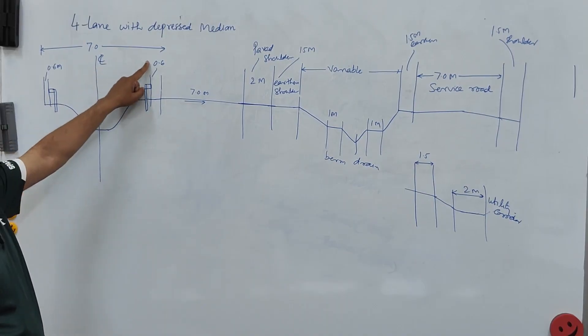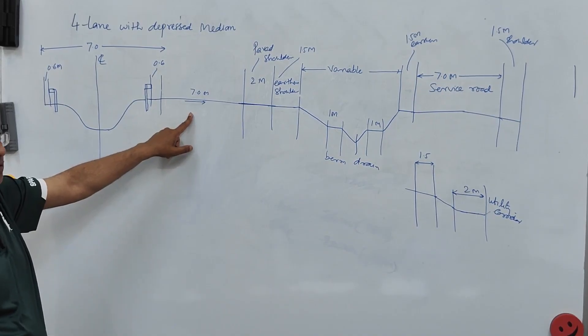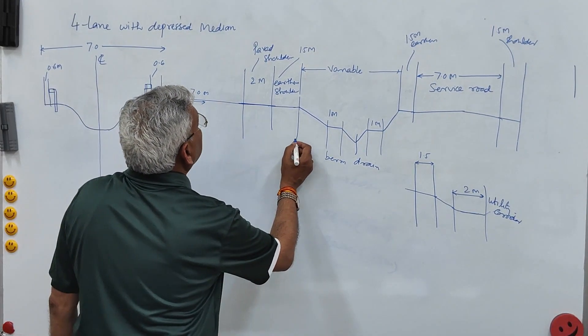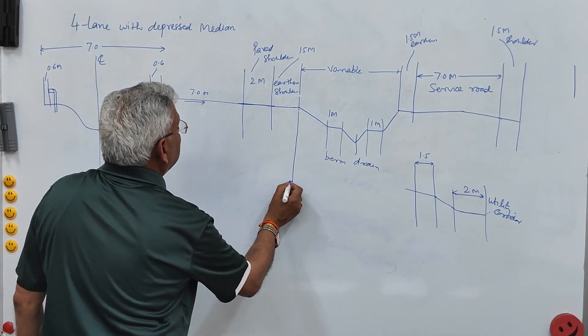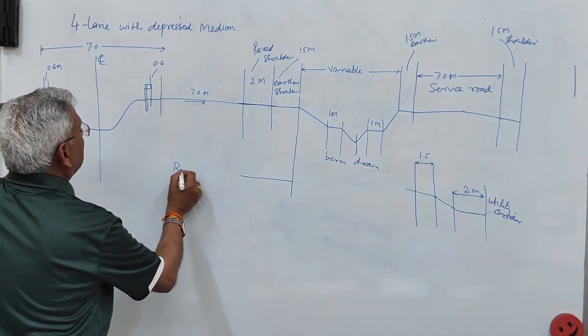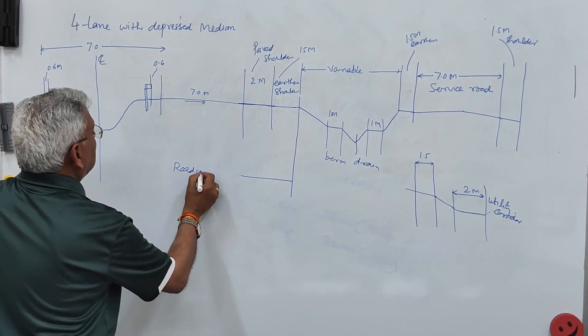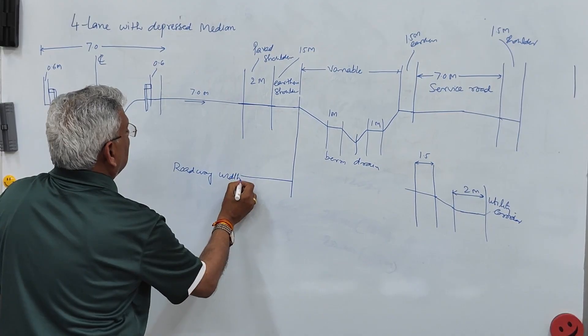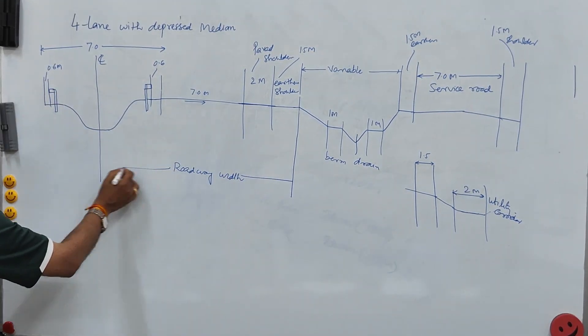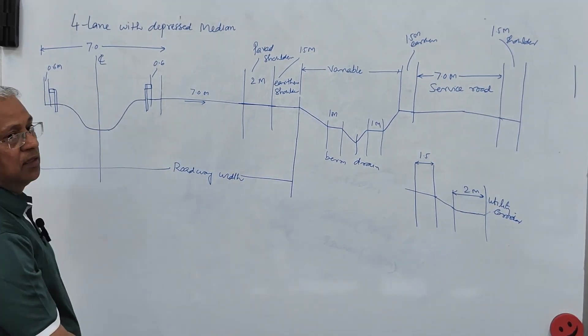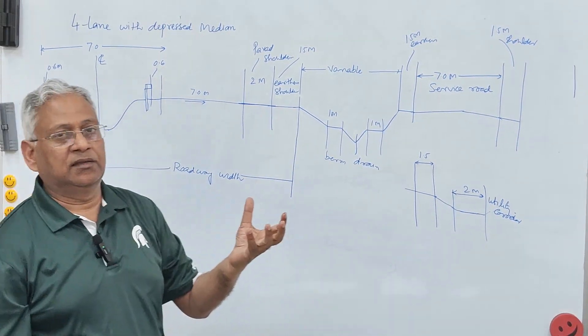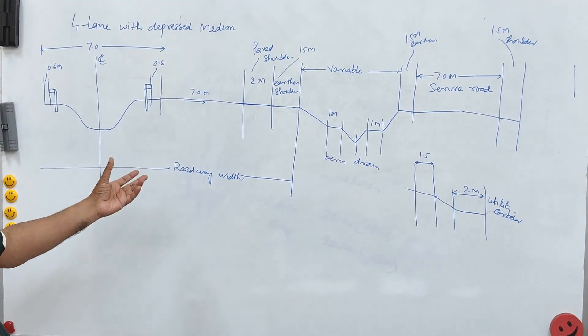Median width 7 meter. Carriageway 7 meter. On one side. Similar details you will have on this side of the center line also. And up to this point. Up to this point. You have the roadway. Roadway width. RW. Up to this point. So it goes up to the limit of earthen shoulders. On this side. This will be 28 meter. If you just add it up. It will be 28 meter.